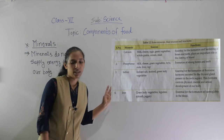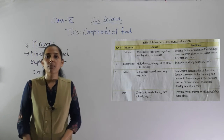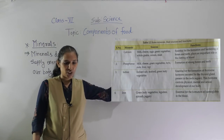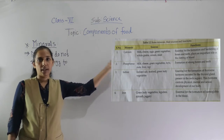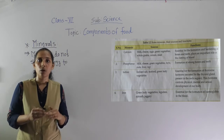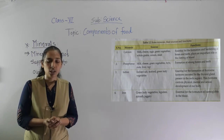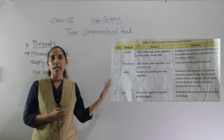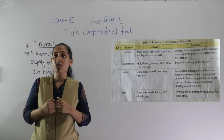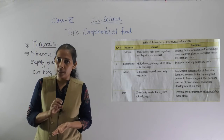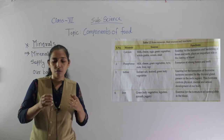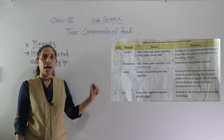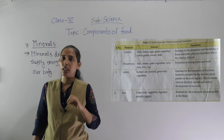The next mineral is iron. The sources of iron are green leafy vegetables, legumes, spinach, and jaggery. The function of iron is that it is essential for the formation of hemoglobin in the blood. Iron mineral helps for the formation of hemoglobin in the blood.